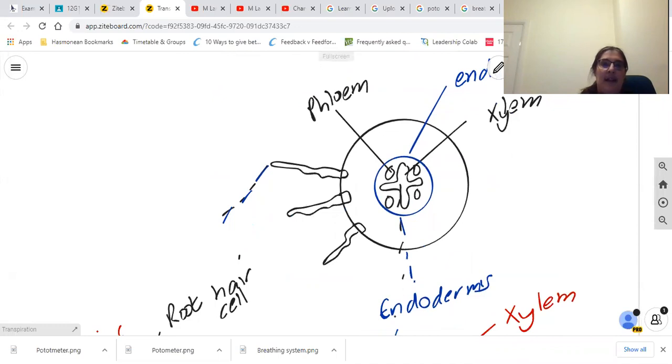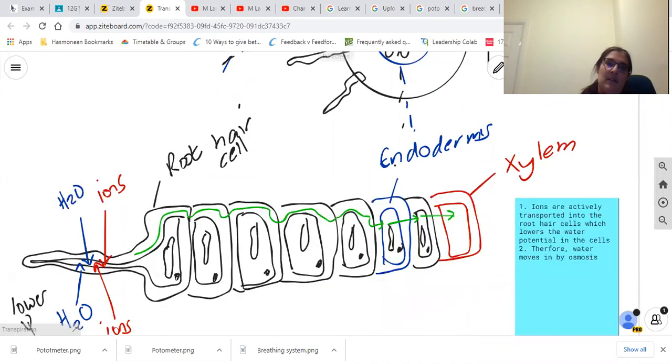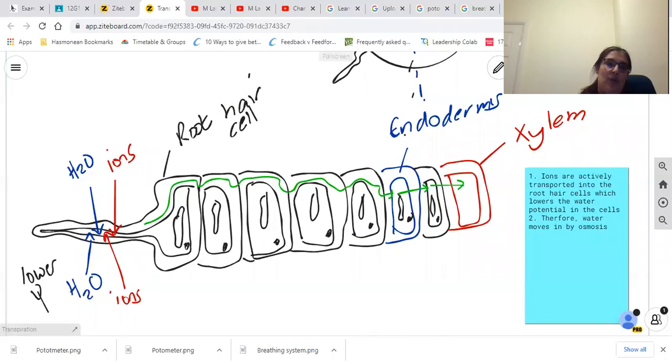We're going to take a cut through from the root hair cell all the way through the endodermis. So you have your root hair cell, then your packing cells, then your endodermis, finishing up with your xylem.